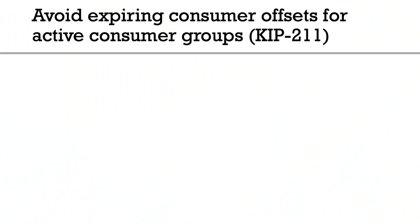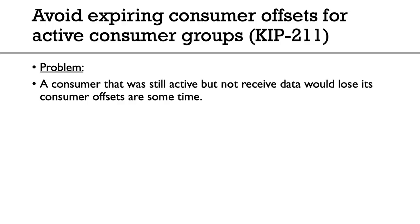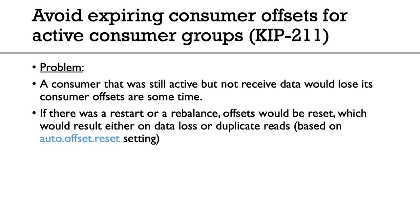Another client fix is the expiration of consumer offsets. There was a bug where if a consumer was active but not receiving data, it would still lose its consumer offset after some time. This was a big problem — if a pipeline was down but the consumer was still up, you'd lose your offsets, and on restart or rebalance the offset would reset, causing either data loss or duplicate reads. This has been fixed in 2.1.